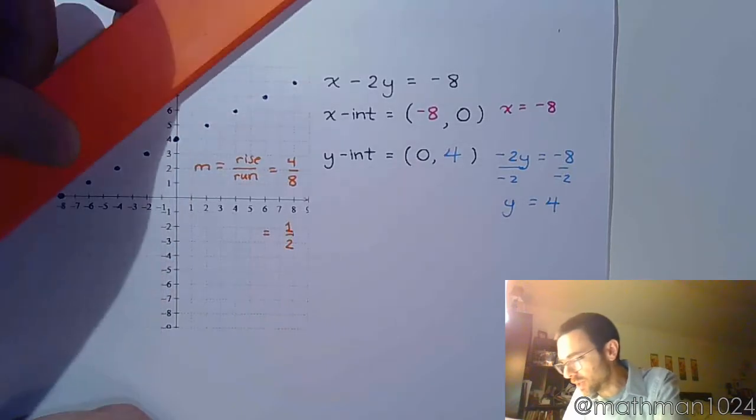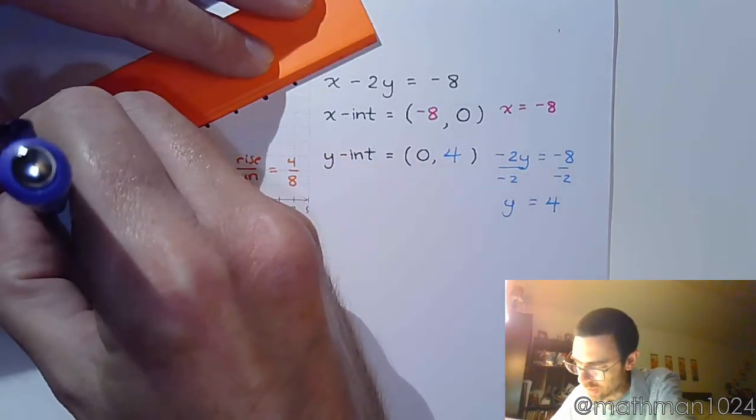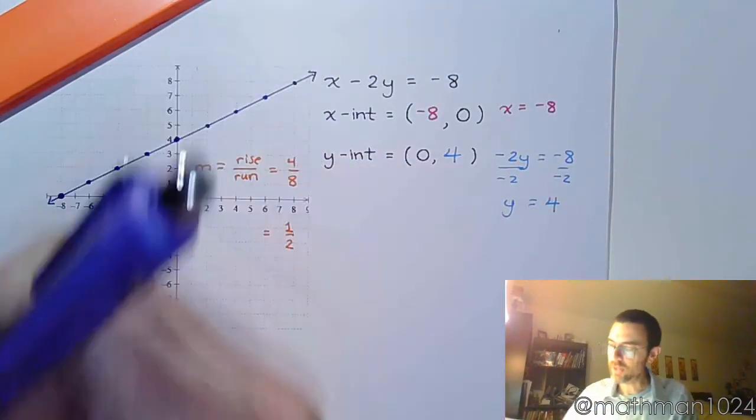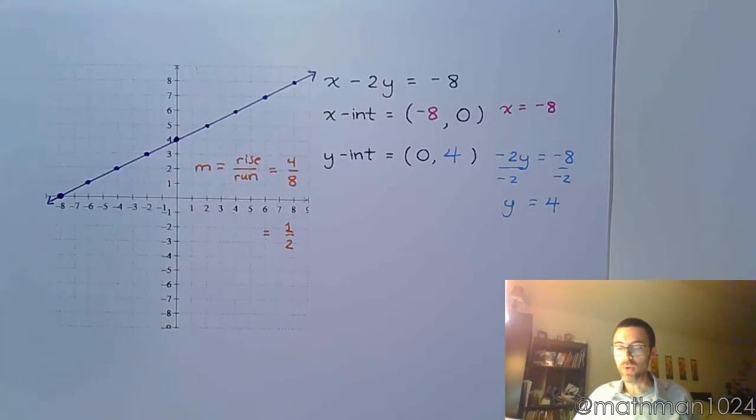Now we just need to connect the dots. And we've got our line, just like this. What we're saying is that any point on here should be a solution to the original equation.